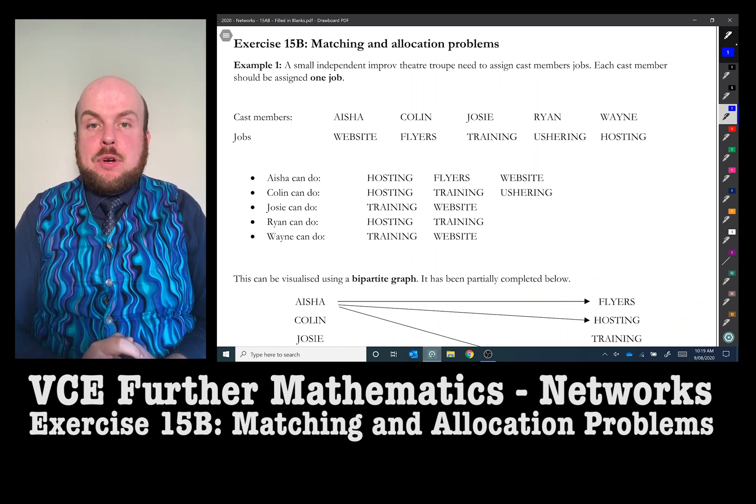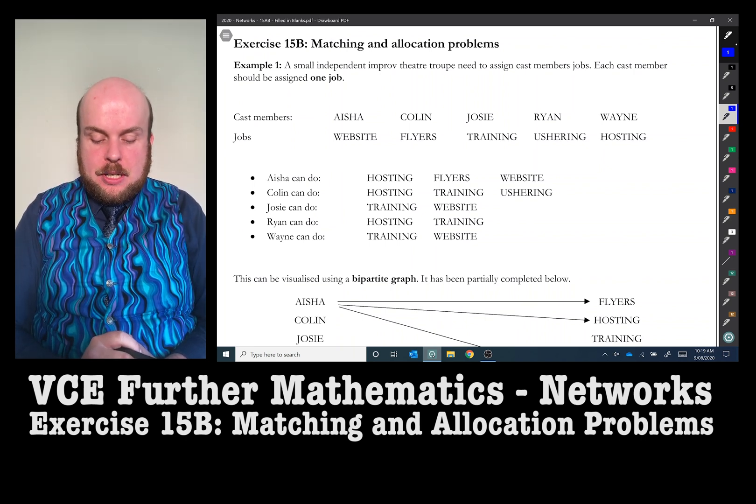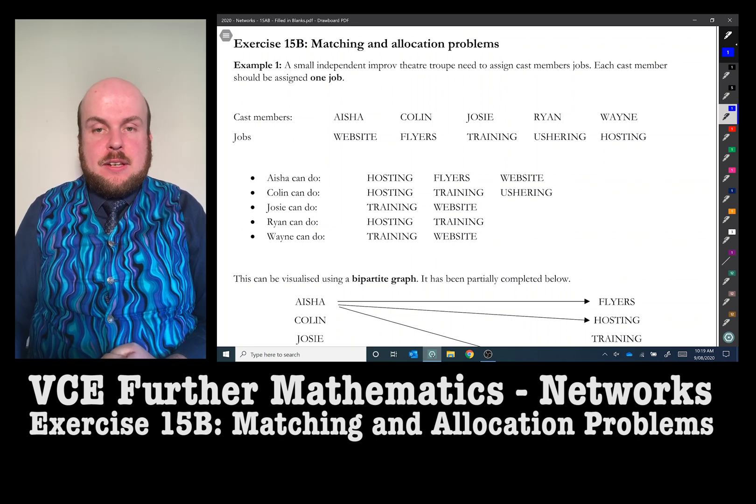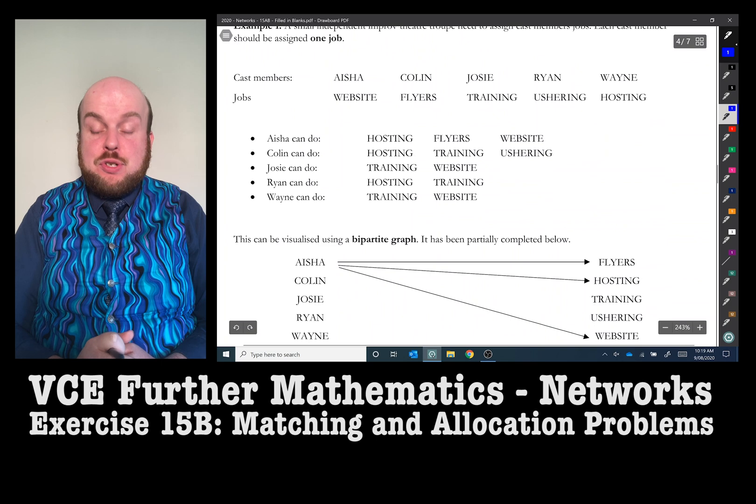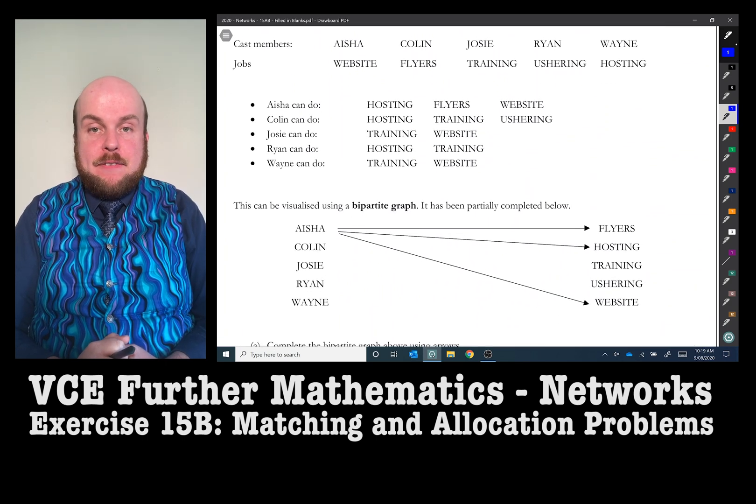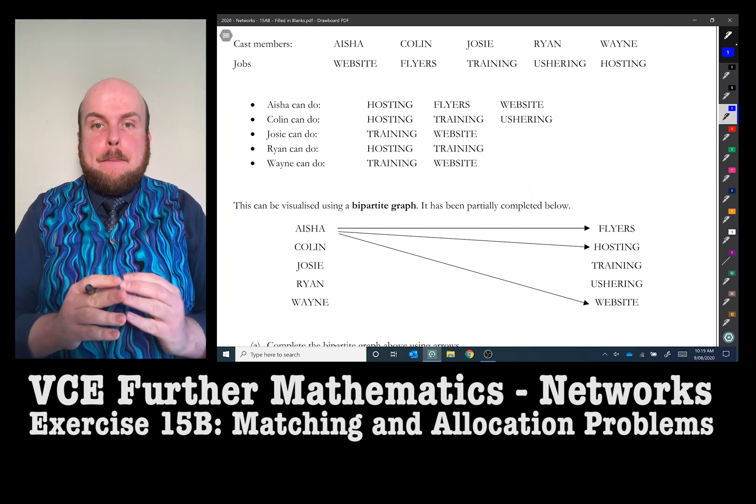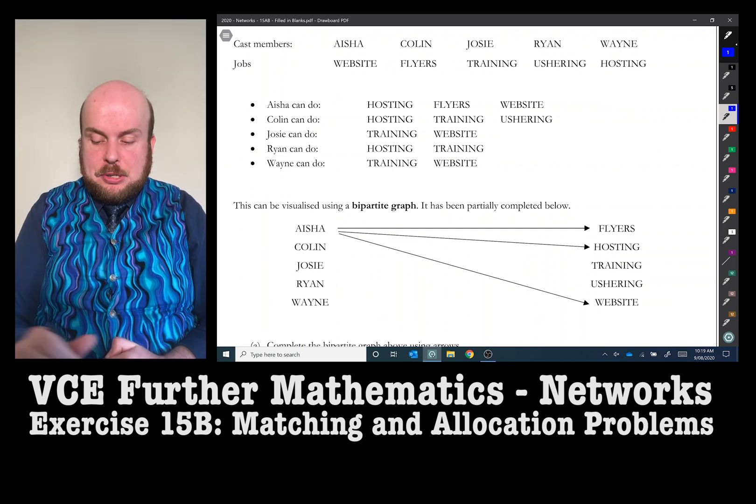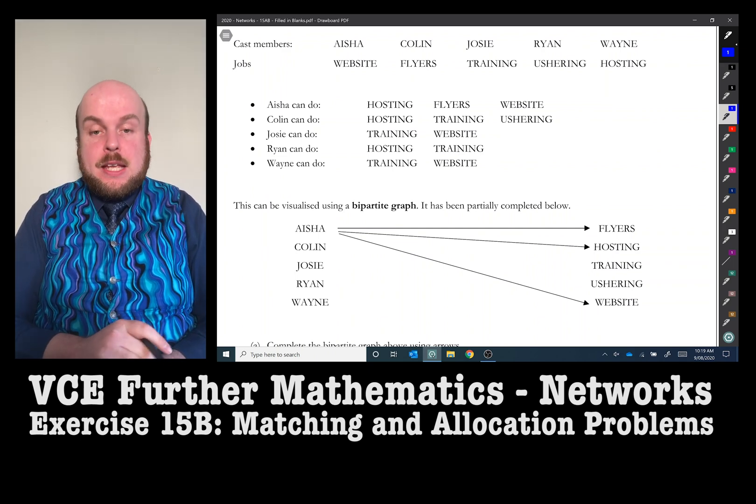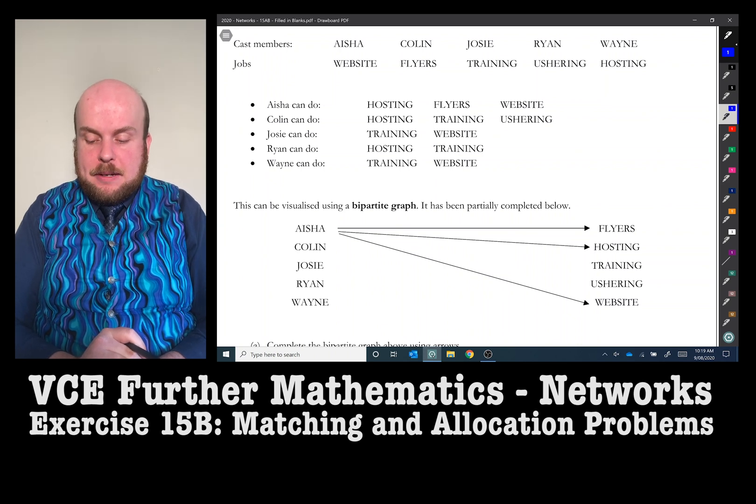I've also listed here what each cast member can do. So the first thing to indicate is that this situation can be visualized using a bipartite graph. Bi meaning two, apartite meaning apart. So we've got two columns that are apart. We have partially completed this below.